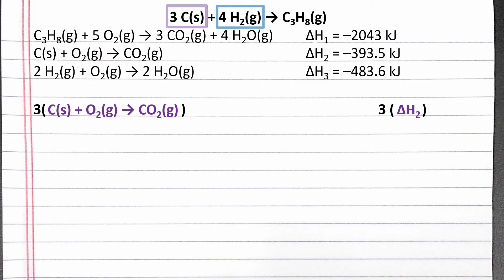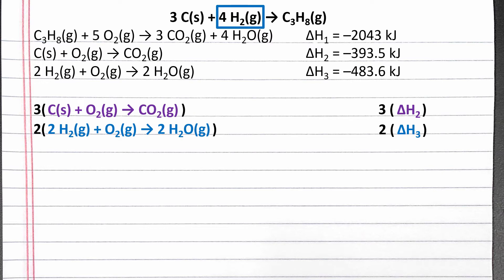Our next substance in the overall equation is hydrogen gas, which only shows up in the third given equation. We want four moles of hydrogen gas as a reactant in our overall reaction, but the third equation only has two moles of hydrogen gas as a reactant. So we need to multiply all the coefficients of the third equation by two, and multiply the enthalpy of reaction by two.